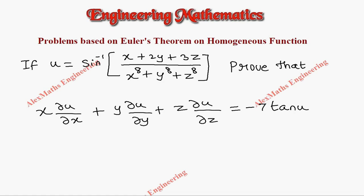Hi students, this is Alex. In this video we are going to discuss a problem based on Euler's theorem on homogeneous functions. Let's carry this sine inverse to the other side so you will get sine u, and that is nothing but x plus 2y plus 3z whole divided by x power 8 plus y power 8 plus z power 8.